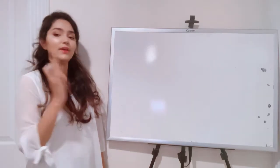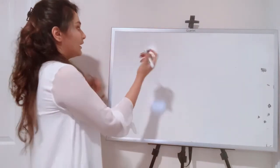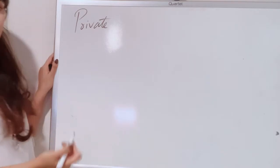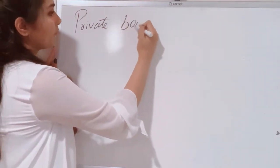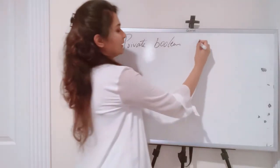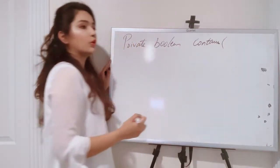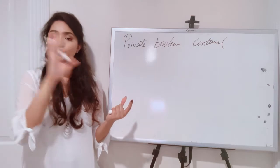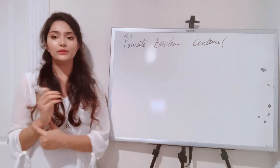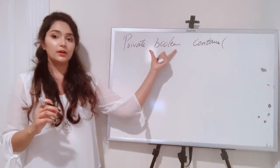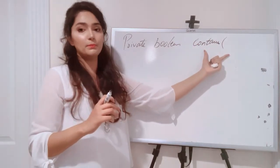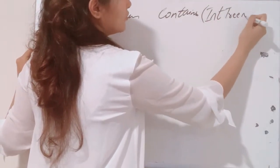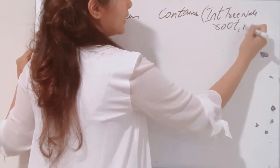The value is provided by the user. In our int tree class, we write the public method and then private. I'm jumping directly to private. The return type will be boolean since we are returning true or false. The method name is contains, and we accept an int value from the user. The user can give any value — 4, 5, 6 — and we have to search through the tree. The private method also accepts an entry node root, along with the int value.